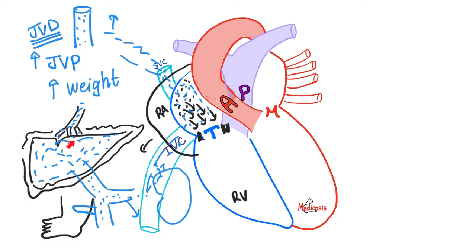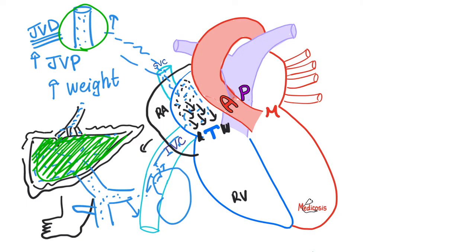Here is one of the most interesting physical exam findings. In normal people, pressing on the liver does nothing. But in patients with tricuspid valve disease, pressing on the patient's liver with your hands pushes fluid up into the right atrium. Because the tricuspid is narrow, this blood cannot go to the right ventricle, so it goes upward into the jugular vein. In patients with tricuspid stenosis or right-sided heart failure, compression of the liver causes congestion of the neck veins. This is the hepatojugular reflux test — from the liver to the jugular.